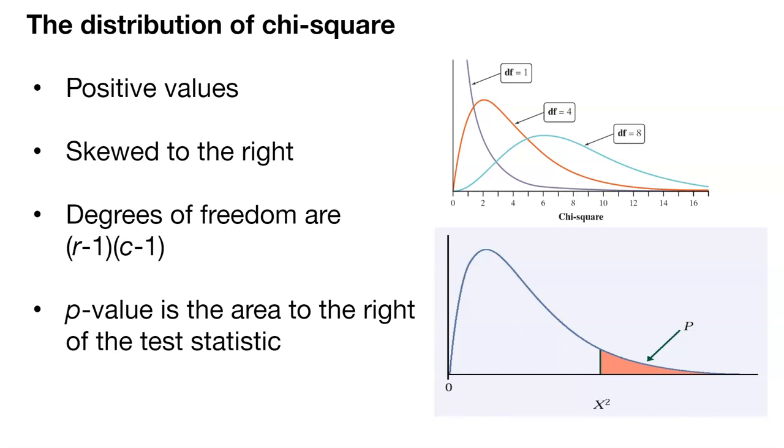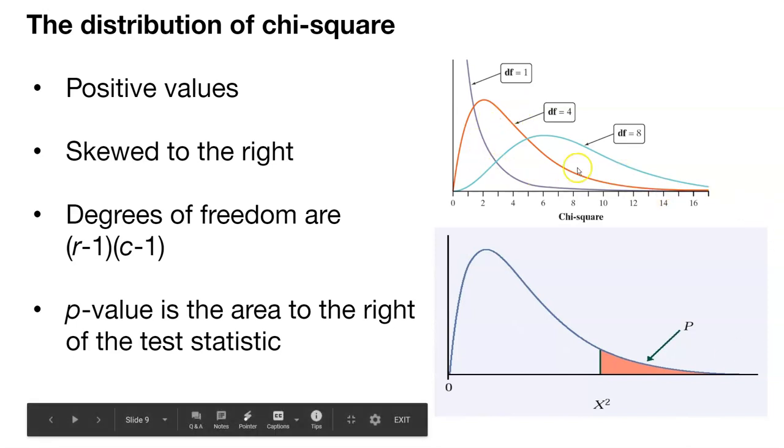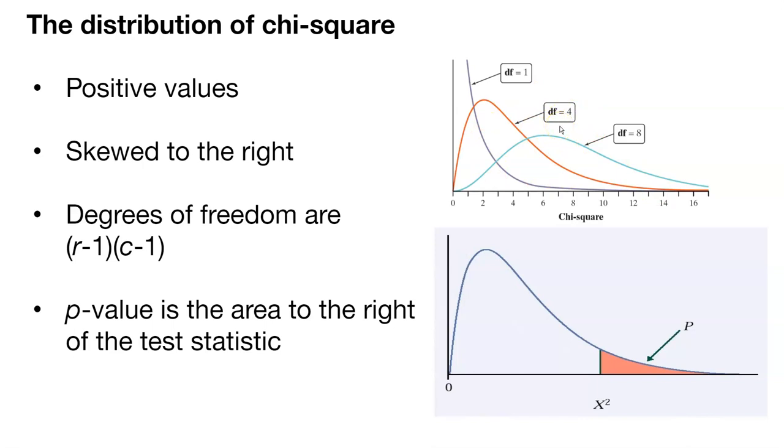Now what about the distribution of chi-square? This is a new distribution we haven't seen before. It always has positive values between zero and infinity. It's skewed to the right. It has a number of degrees of freedom, the number of rows minus one, times the number of columns minus one.